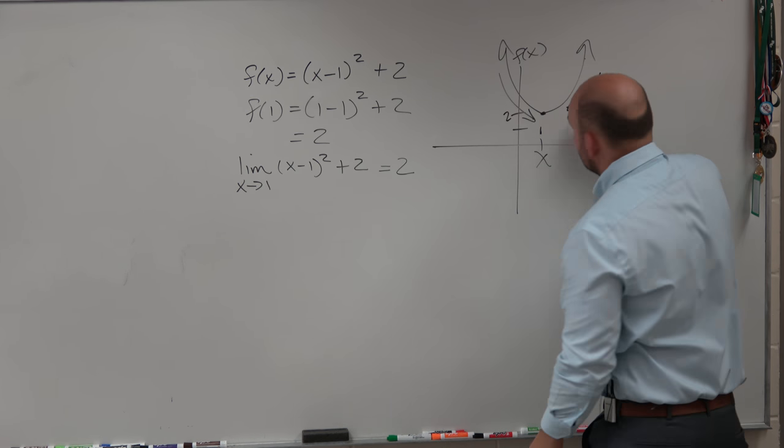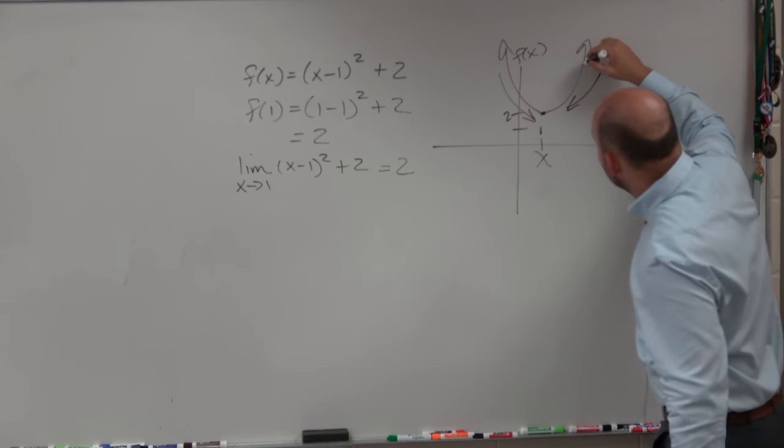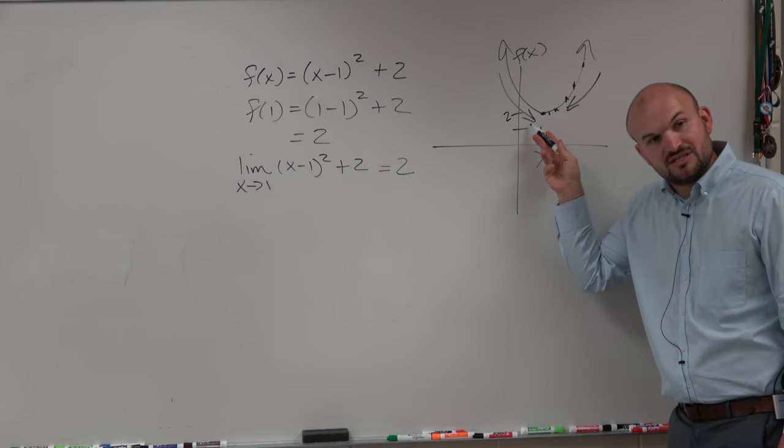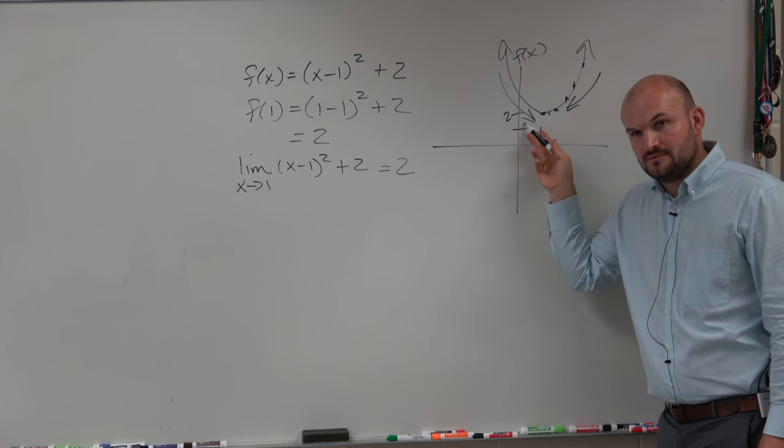And then from the right, as we approach, as these dots, as the x values get closer and closer to 1 from the right, you can see again we're approaching this value of 2. Does everybody see that?